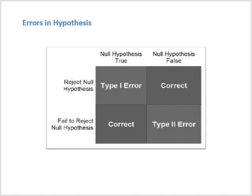Now we come to errors in statistical hypothesis. We are testing the hypothesis — whether it is true or false, whether it is accepted or rejected. Obviously in any testing there will be some error, and in statistical hypothesis testing there also exist errors. There are two types of error in statistical hypothesis testing: one is Type 1 error and another is Type 2 error.